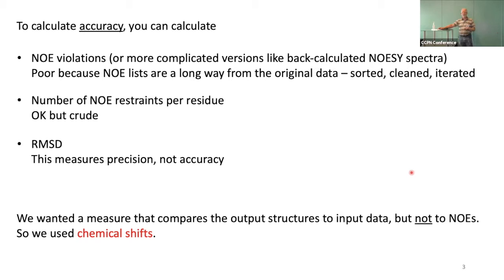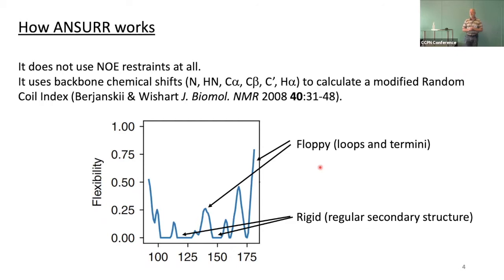So how does ANSWER work? We don't use NOE restraints at all — it's basically using chemical shifts. You take your backbone chemical shift measurements — these six shifts — and calculate what is essentially the random coil index, which David Wishart published quite a long time ago. Here's an example of the random coil index (RCI), where you've got your sequence on the bottom and essentially a flexibility score up the side. There are some rigid bits which are secondary structure, and some less rigid bits which are loops and the termini of the protein.